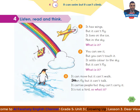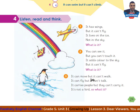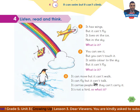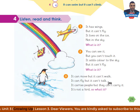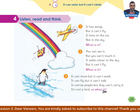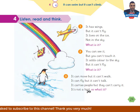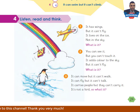Riddle 3: it can move but it can't walk. It can fly but it can't talk. Riddle 4: it carries people but they can't carry it. It's not a bird, so what is it? Now you can read these riddles and try to write the answers.